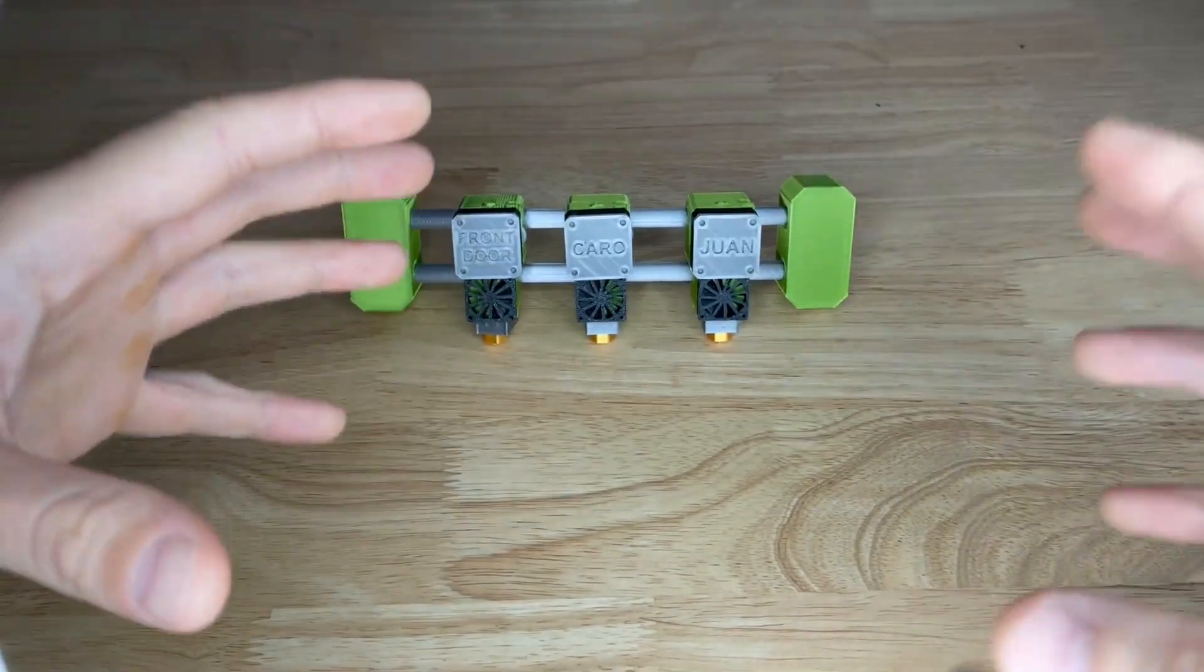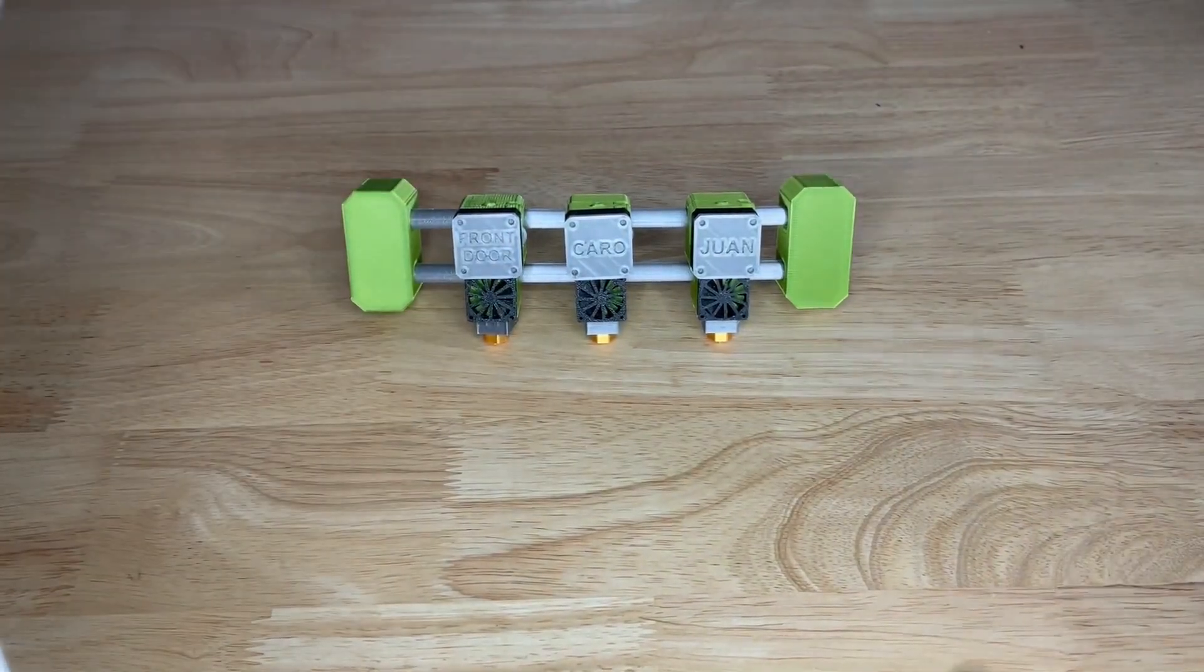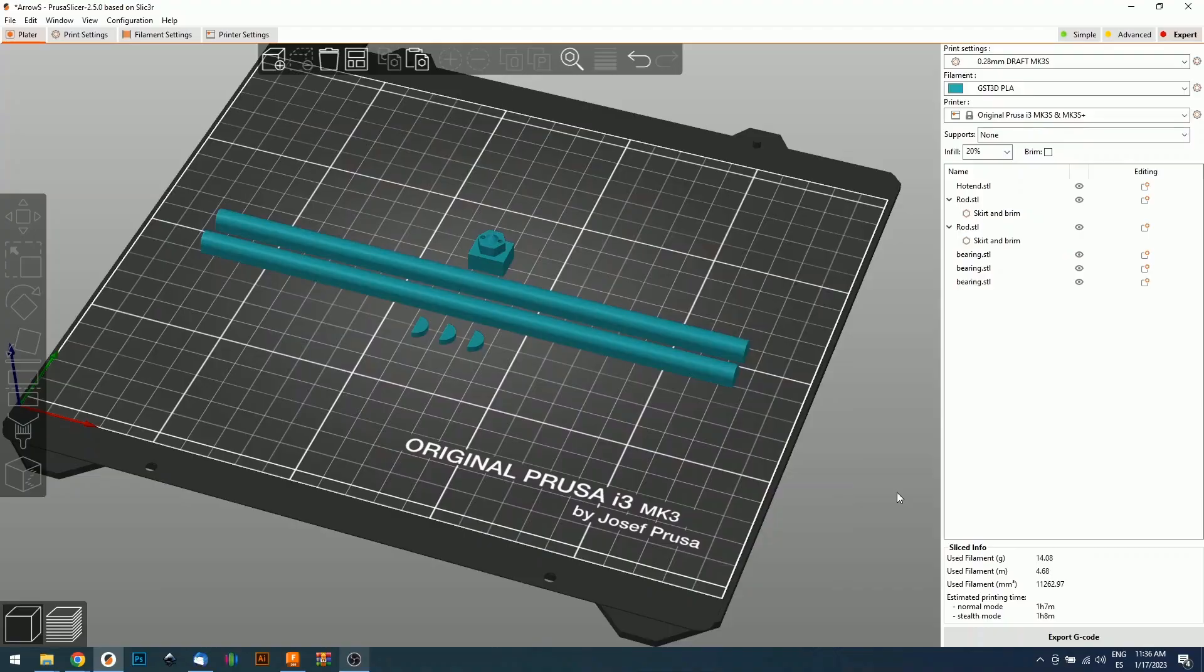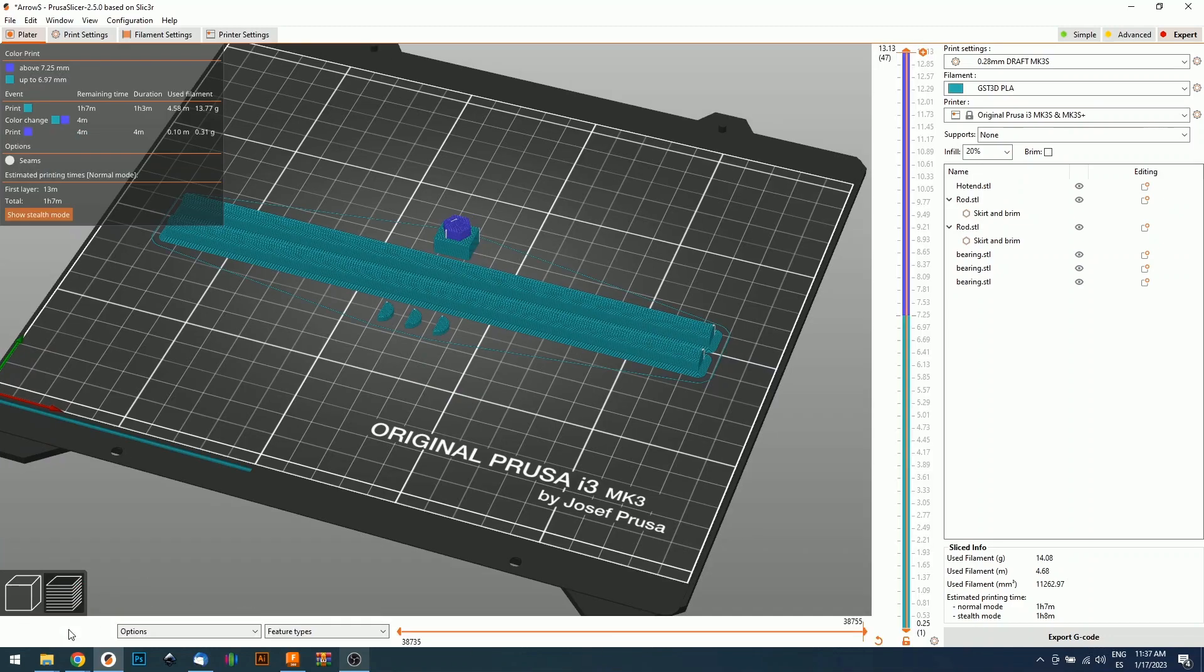In case you want to know how I slice my files, I'm going to show it to you right now. I'm going to quickly show you how we're going to slice everything. These three models - the Hutton, the rods, and the bearing - can be sliced together.